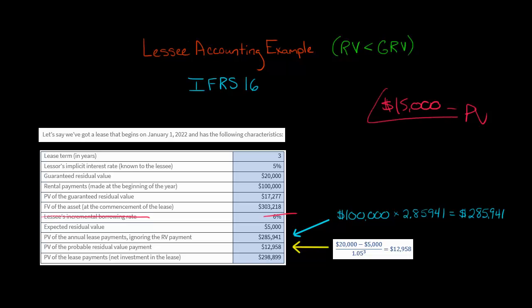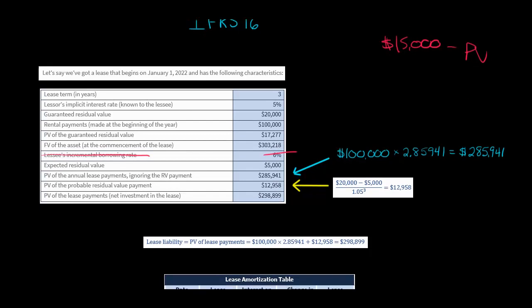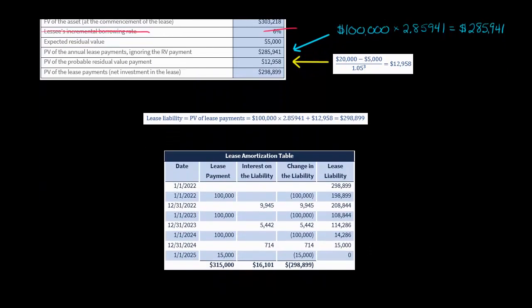In short, the lessee is expecting they're going to have to make this final payment of $15,000 to make the lessor whole for the fact that the asset had a value less than what they had guaranteed. We take the present value of the three $100,000 payments ($285,941) and add the present value of the $15,000 shortfall ($12,958), and adding those two together gives us the present value of all the lease payments — $298,899. This is the initial measurement of our lease liability, and you can see it at the beginning of the lease amortization table.